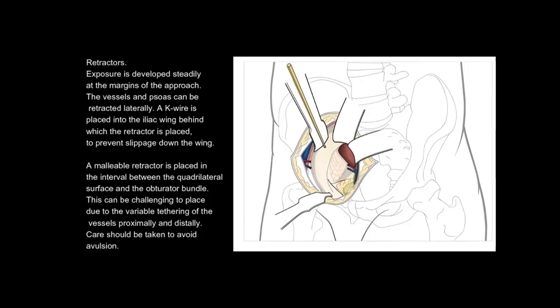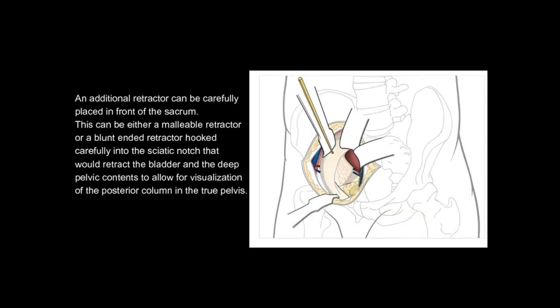Exposure is developed steadily at the margins of the approach. The vessels and psoas can be retracted laterally. A K-wire is placed into the iliac wing, behind which the retractor is placed to prevent slippage down the wing. A malleable retractor is placed in the interval between the quadrilateral surface and the obturator bundle. This can be challenging to place due to the variable tethering of the vessels proximally and distally. Care should be taken to avoid avulsion.